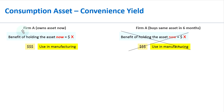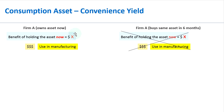When you hold a consumption asset, for example, firm A owns the asset now, there is a benefit of holding the asset now because the asset can be used in manufacturing. Let's assume that particular benefit is X dollars.